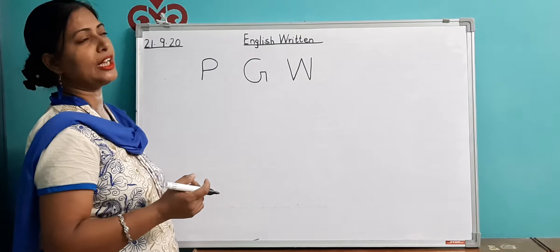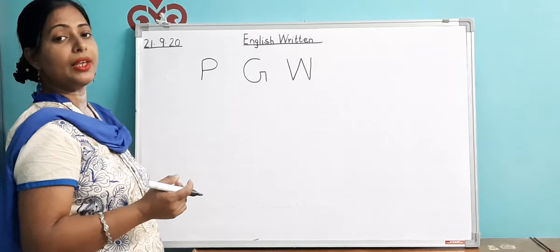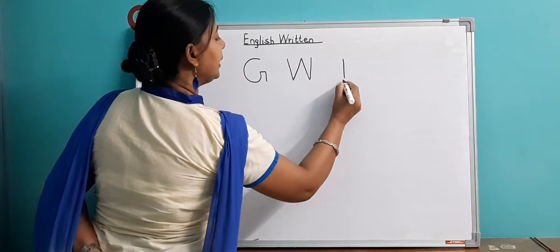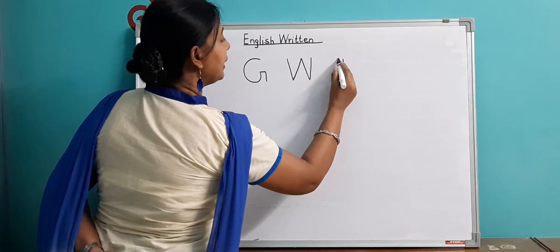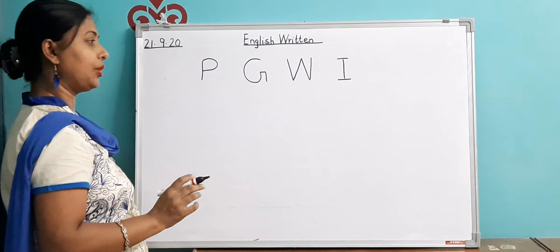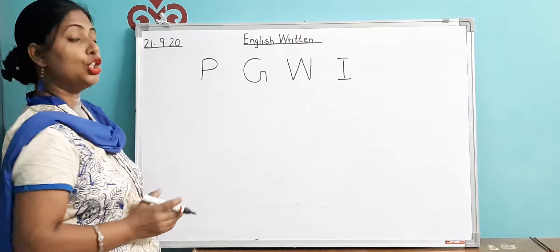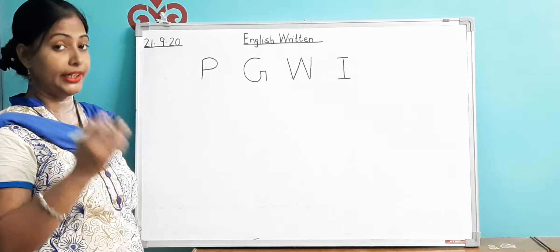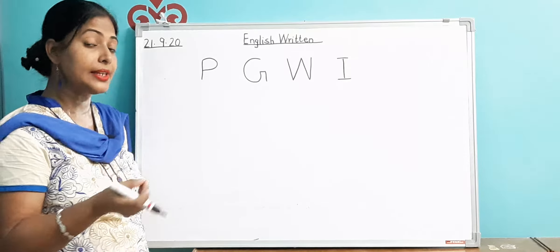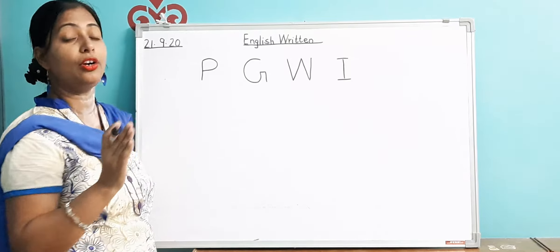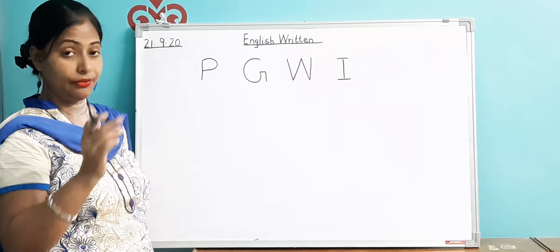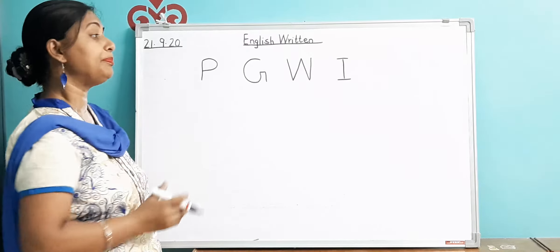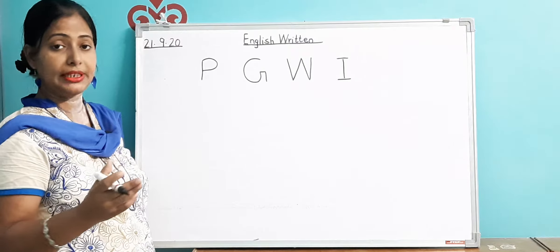This is called dictation. I will say the alphabet and you have to write it in your copy. You should be able to write within the four lines. Whatever alphabet I say, you will hear it carefully and then write — you have to do it yourself. Today I will be teaching you the dictation. So now quickly take out your copy.